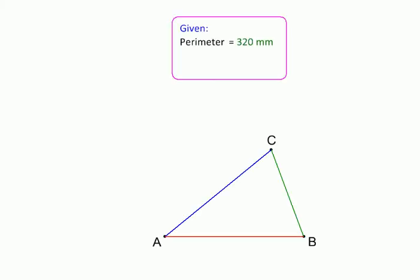Here we will be solving a geometric problem of constructing triangle ABC from its perimeter of 320 millimeters and angles A equal to 40 degrees and B equal to 70 degrees. The difficulty here is obvious the length given to us, the perimeter, is the sum of these three sides.